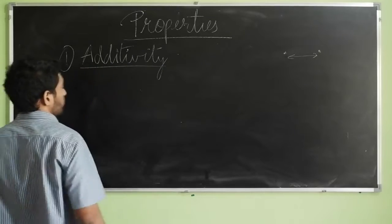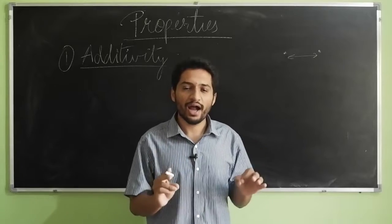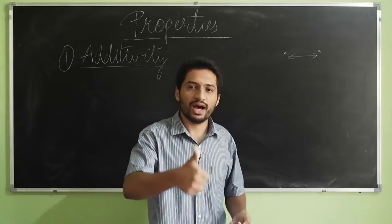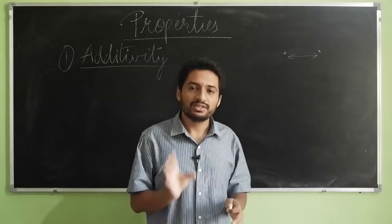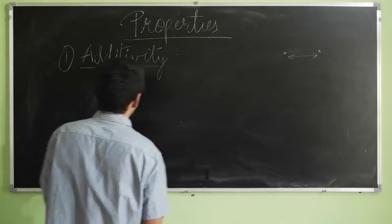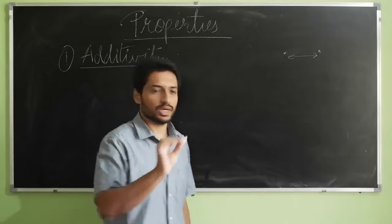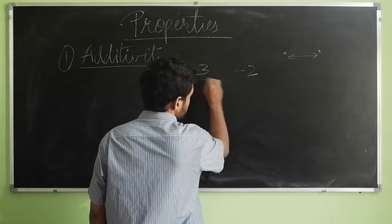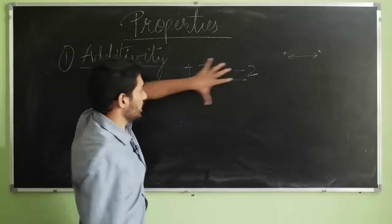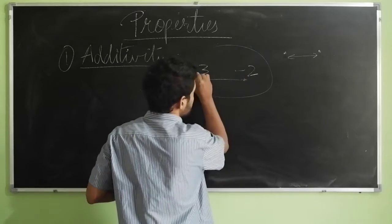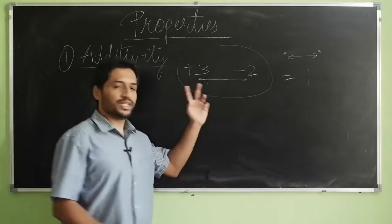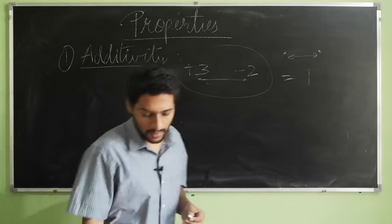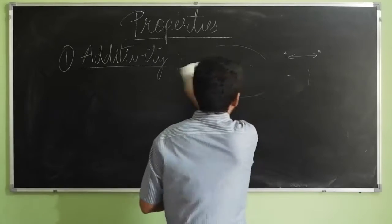So what is additivity? Additivity means charges can be added similar to real numbers — integers. For example, if I have a plus 3 charge and a minus 2 charge, the total charge of the system would be plus 3 minus 2, which equals 1. So charges can be added similar to numbers. That is the first property of electric charge.